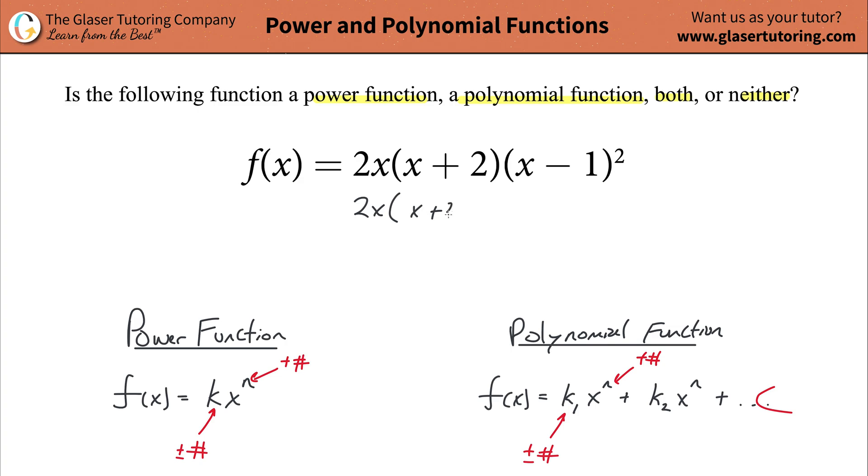So 2x, x plus 2, why don't we just simply square this? So that's x minus 1 times x minus 1. So we know, we can do that math. So this is 2x, then this is x plus 2.